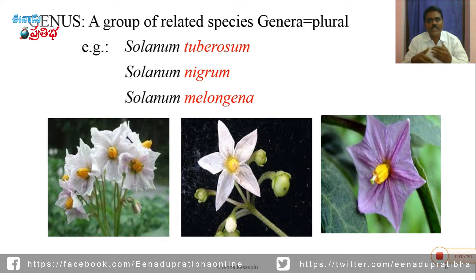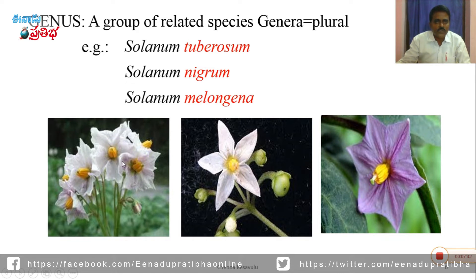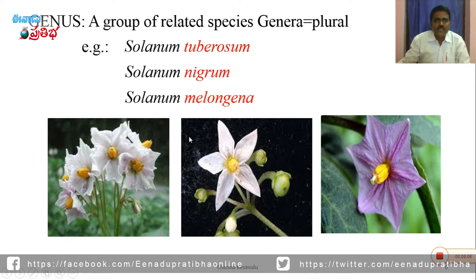Solanum is a genus. It has three types of species: Solanum tuberosum (brinjal/potato), Solanum nigrum (kamanji), and Solanum melongena. All three belong to the same genus, Solanum. All the flowers have different colors but have a similar number of stamens and petals. That is why a group of related species is called a genus.